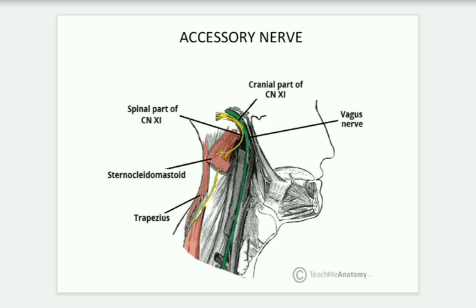Next is the accessory nerve, which has two parts: cranial and spinal. The cranial part arises from the medulla oblongata, enters the cranium via the jugular foramen, where it contacts the spinal part of the accessory nerve. The cranial part then combines with the vagus nerve. For this reason, the cranial part of the accessory nerve is considered part of the vagus nerve.